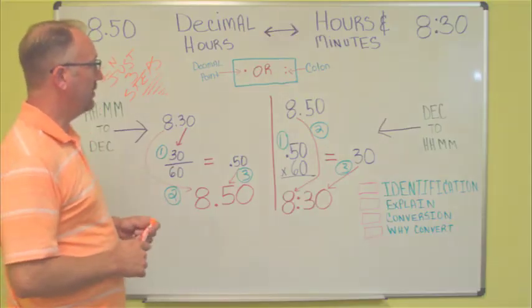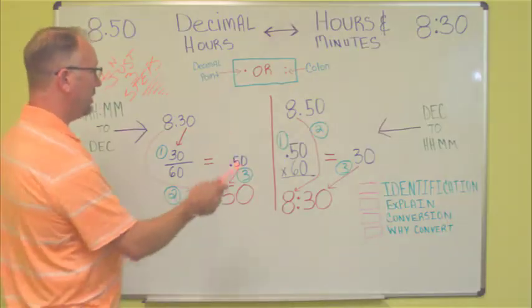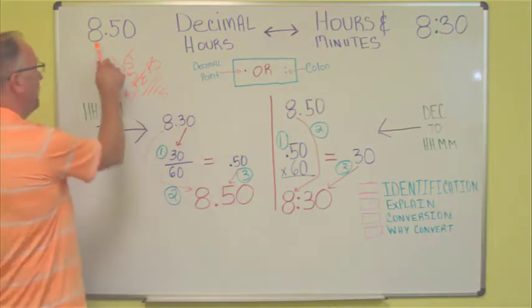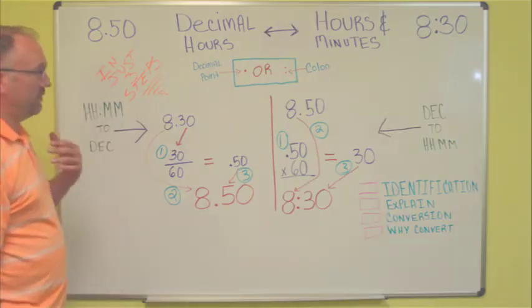First, we'll talk about how to identify the decimal hours format versus hours and minutes. For decimal hours, we'll always be looking for a decimal point. For instance, 8.50 hours. That is a decimal hour format.